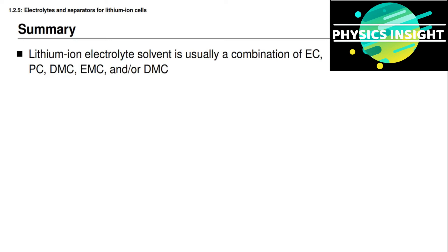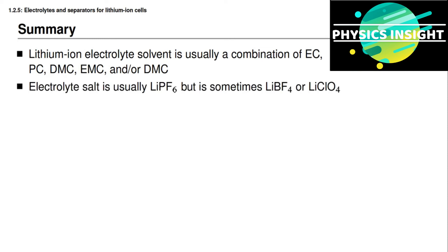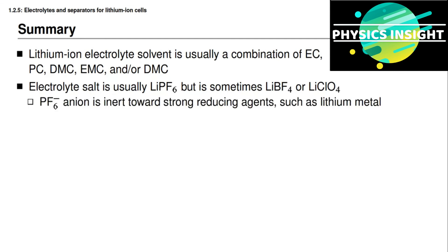To summarize this lesson: the electrolyte in a lithium-ion battery cell comprises both a solvent and a salt. The solvent is usually made from some combination of ethylene carbonate, propylene carbonate, dimethyl carbonate, ethylmethyl carbonate, and diethyl carbonate. The salt is usually lithium hexafluorophosphate (LiPF6), though other options include lithium tetrafluoroborate and lithium perchlorate. The most common salt, LiPF6, dissociates into a lithium cation and a PF6⁻ anion in the solvent.